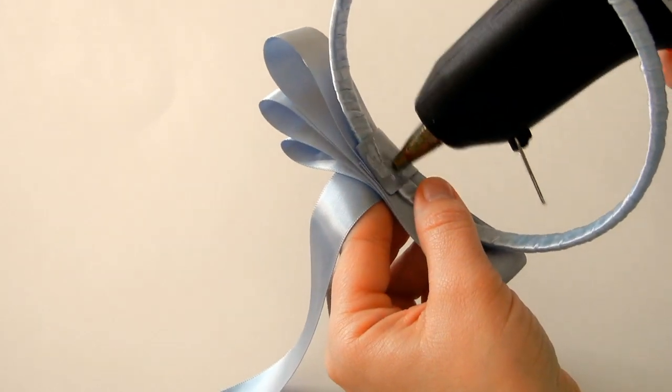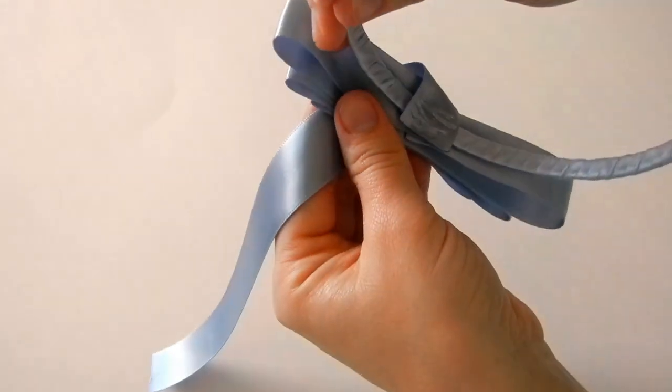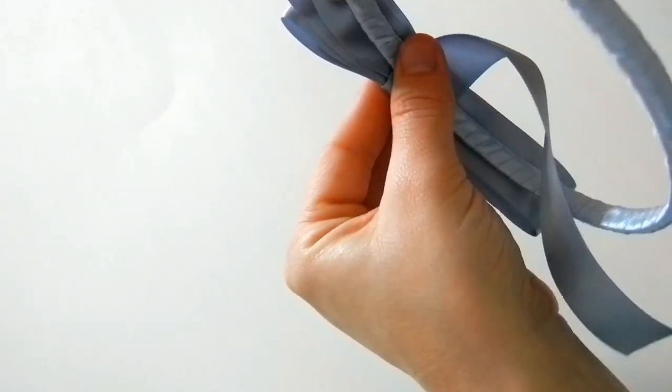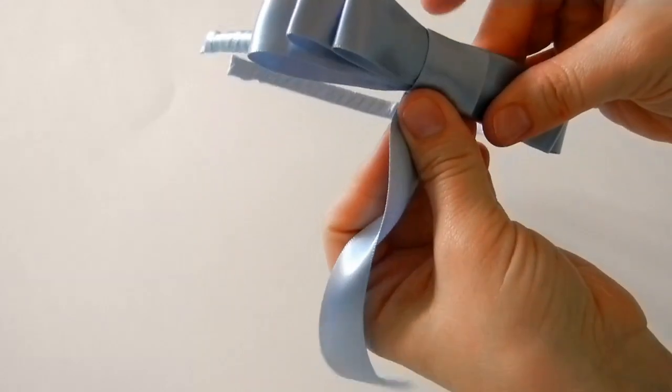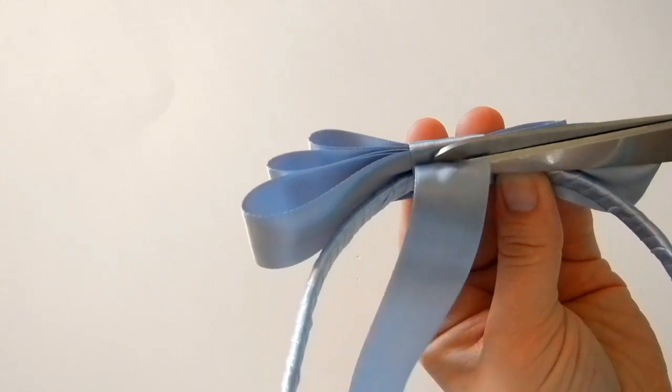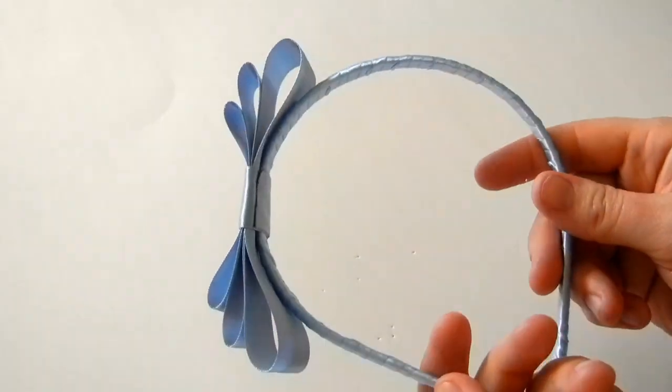Gently wrap around. The reason why I say gently is because we don't want to crease these loops. We want to just keep them nice and flat for this type of bow. Then just cut off your excess and take your lighter and seal your ends.